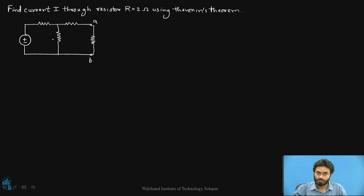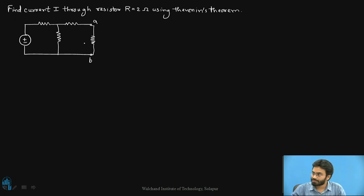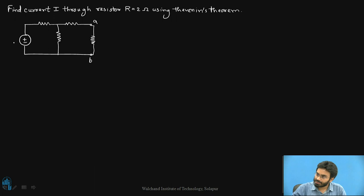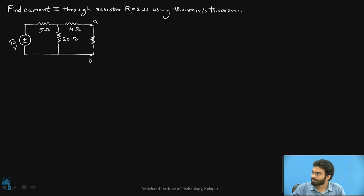Let us have a look at the problem and analyze how to solve it to finally identify the Thevenin's equivalent and also to find the current flowing through the resistor R equals 2. The voltage source is 50 volts, whereas the resistor values are 5 ohms, 20 ohms, and 4 ohms. The 2 ohm resistance is the load resistance across which we are supposed to calculate the current.